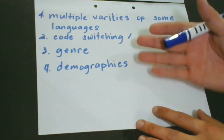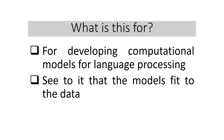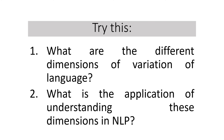Some languages have good corpora collected from different historical periods. Language is so situated. In developing computational models for language processing, it is important to consider the speaker, the context, and the purpose, and to see to it that our models are fit to the data. What are the different dimensions of variation of language, and what is the application of understanding these dimensions in natural language processing? Please leave your answers in the comments below so we can have a rich exchange of ideas.